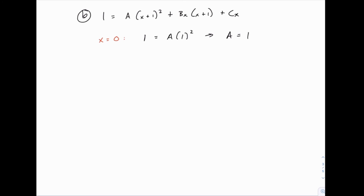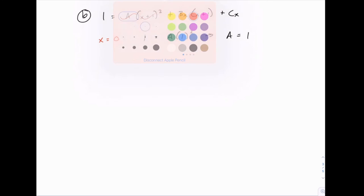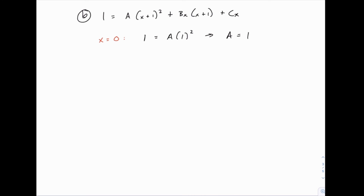The next factor to notice is (x+1). What makes that equal 0? That would be x = -1. Plugging in x = -1: the left side is 1. On the right side, a(x+1)² becomes a(0)², so that disappears. b(-1)(0) also disappears. And all we have is c times (-1). So we can solve directly to find that c = -1.